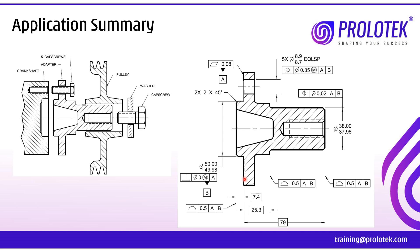Applying the TTFT approach: first T — this is a prismatic feature. Second T — the application is individual feature. In individual feature, we have only one possibility, which is to control the form. So out of the four errors — size, form, orientation, and location — we can control only the form for an individual feature.